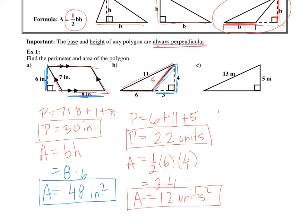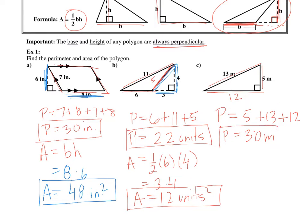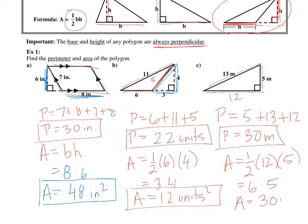For the next one, the perimeter is 5 plus 13 plus the missing side, which is 12 — using Pythagorean triples again — so we end up with 30 meters. For area, it's simply half the base times the height: 6 times 5, so the area is 30 meters squared.